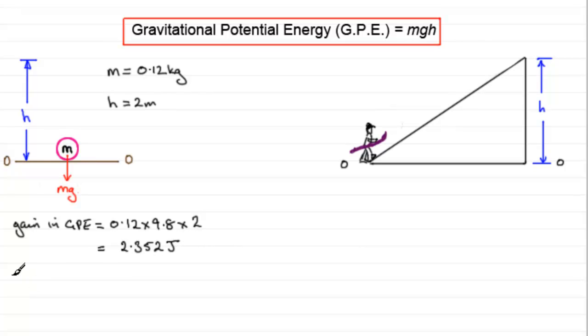And when it falls, what happens is we lose gravitational potential energy. And we talk about the loss in gravitational potential energy. It's still going to be MGH, which is going to be 2.352 joules.